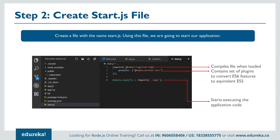For example, arrow functions need to be converted to normal functions using the function keyword. There's also object destructuring using spread syntax — that needs to be transpiled to equivalent ES5 syntax. For arrow functions, you can directly replace with normal functions, but for object destructuring there's no direct equivalent, so Babel provides fallback code to run those features in ES5. We start the application code in app.js.